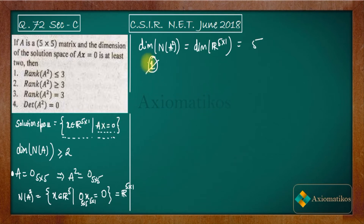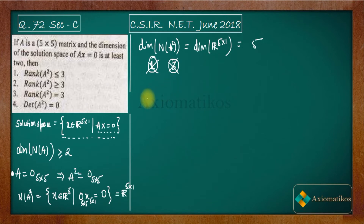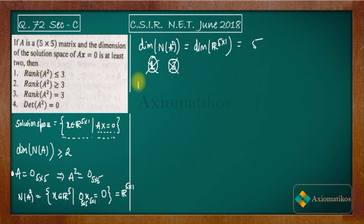From this, we can discard option 1 (rank(A²) ≤ 3 fails when rank is 0... wait — we can discard option 3 (rank(A²) = 3 is not always true) and option 2 (rank(A²) ≥ 3) is also incorrect. So options 2 and 3 are discarded. Now let us apply the rank-nullity theorem, which is a very important theorem.